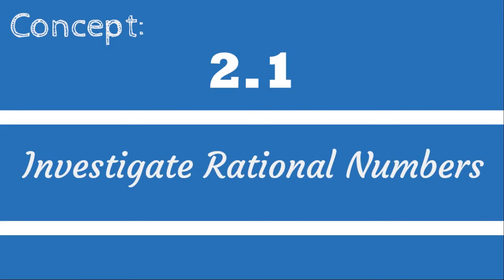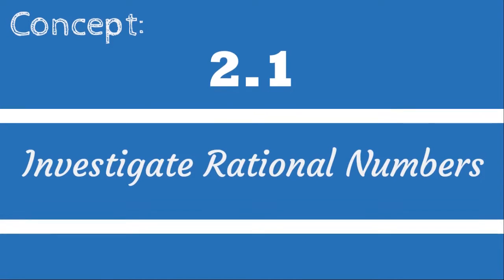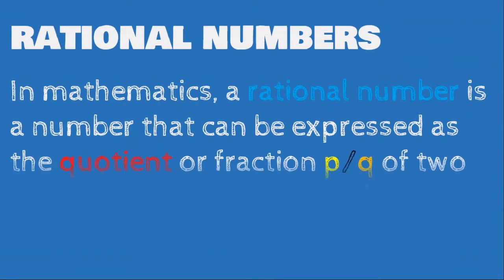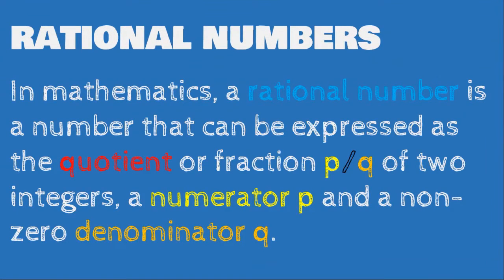All right, and we're back with Concept 2.1: Investigate Rational Numbers. In mathematics, a rational number is a number that can be expressed as the quotient or fraction p over q of two integers — a numerator p and a nonzero denominator q.